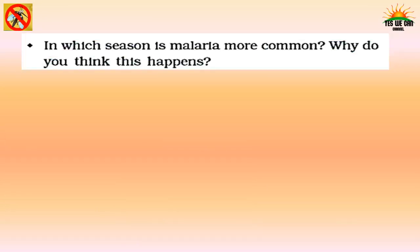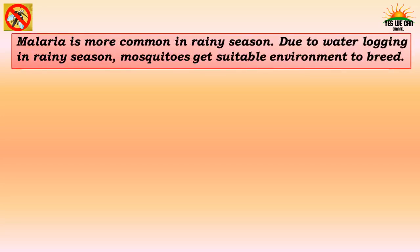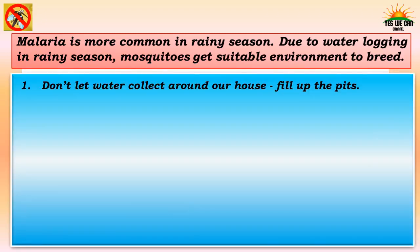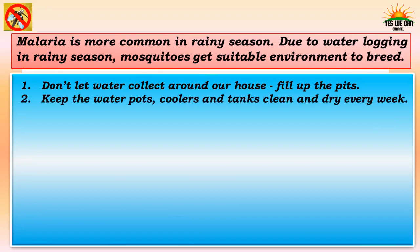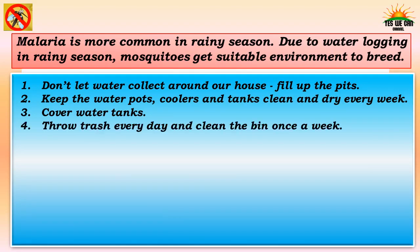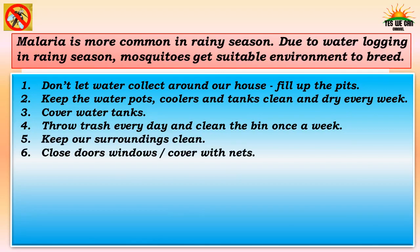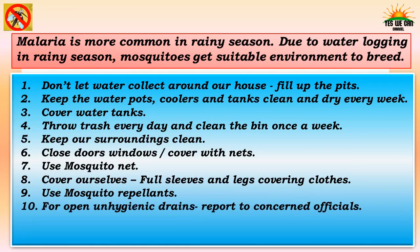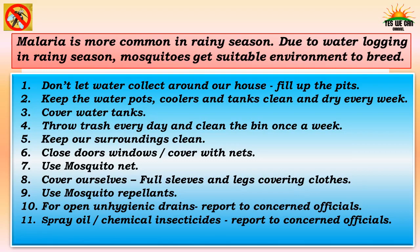Malaria is more common in the rainy season because water logging gives mosquitoes a suitable environment to breed. To protect yourself from mosquitoes: don't let water collect around your house, fill up pits, keep water pots, coolers and tanks clean and dry every week, cover water tanks, throw trash daily, keep surroundings clean, close doors and windows and cover with nets, use mosquito nets, wear full-sleeved clothes, use mosquito repellents, report open unhygienic drains to concerned officials, spray oil or chemical insecticides, and use mosquito fish in pools and ponds.